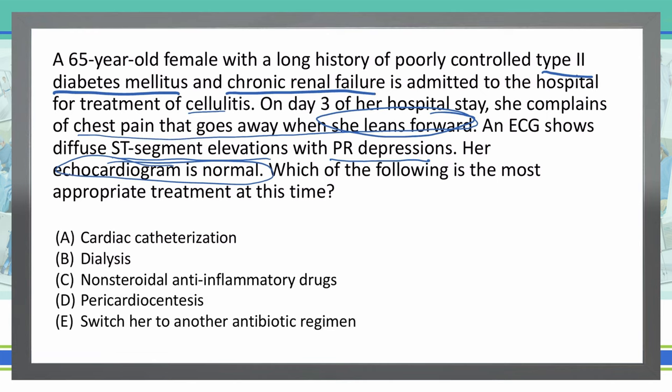Let's start with option A: cardiac catheterization. If we were dealing with a STEMI or acute coronary syndrome, this would be our definitive go-to choice. But this patient isn't presenting with a risk for ischemic heart disease based on these symptoms. I believe she's dealing more with pericarditis versus acute coronary syndrome, so cardiac catheterization will not be my first choice here.